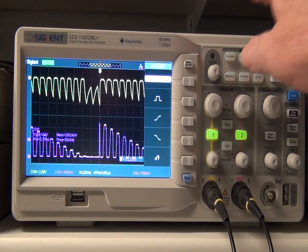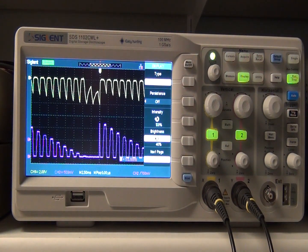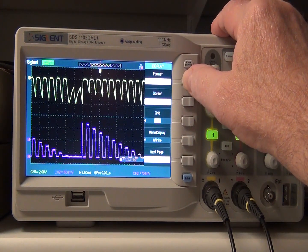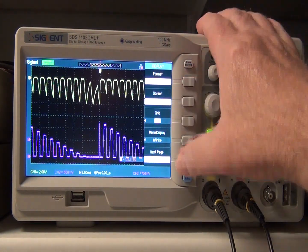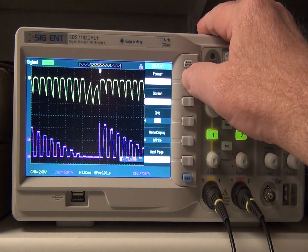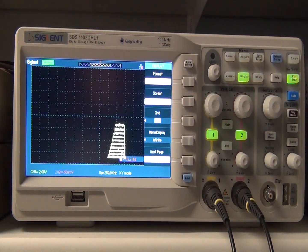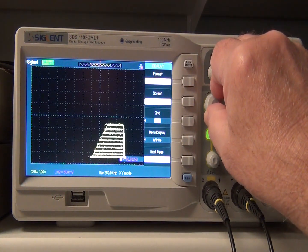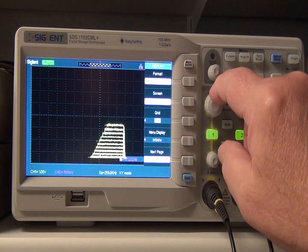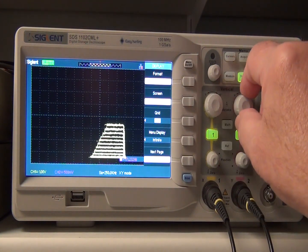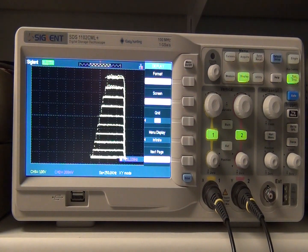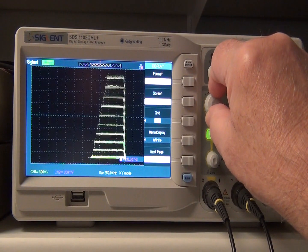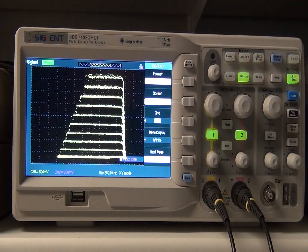So those are the waveforms that we're actually looking at on X and Y. Then if you want to select the X, Y, you go to display. Go to page two. And then select X, Y. Then you have to adjust the horizontal a bit, which is the X. And then you can adjust the Y with channel two. And we're back there at it.